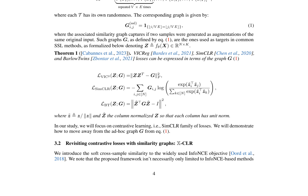The authors focus on the SIM-CLR family of losses and aim to move away from the ad hoc binary graph G. They introduce X-CLR, which incorporates soft cross-sample similarity into the widely used INFO-NCE objective, allowing for modeling interclass relationships and enabling the learning of more nuanced and robust representations.